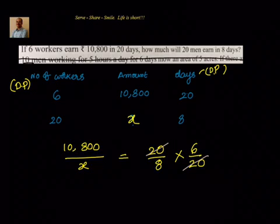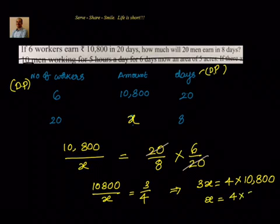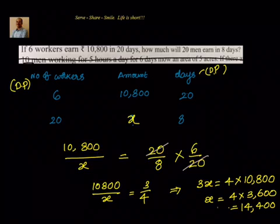Now let us simplify. 10,800 divided by x equals 6 by 8, which equals 3 by 4. On doing cross multiplication, we get 3x equals 4 into 10,800, or x equals 4 into 3,600, which equals 14,400. So the amount they will earn is 14,400.